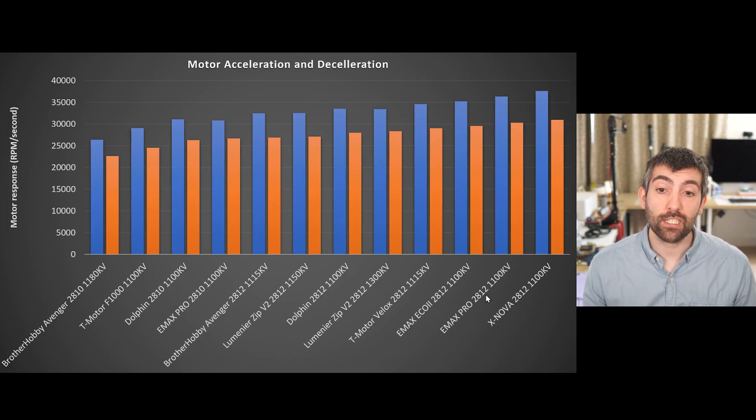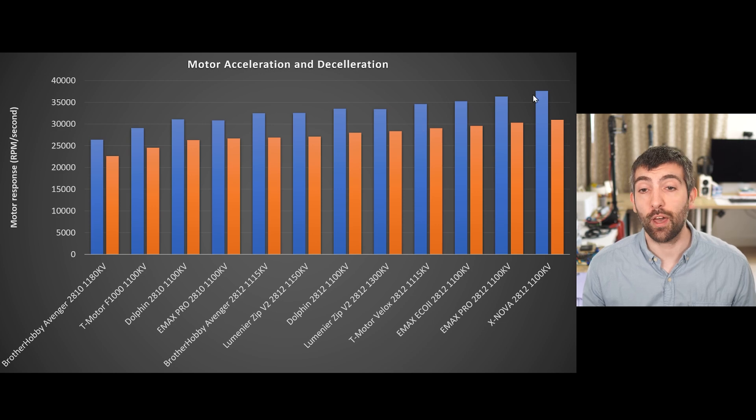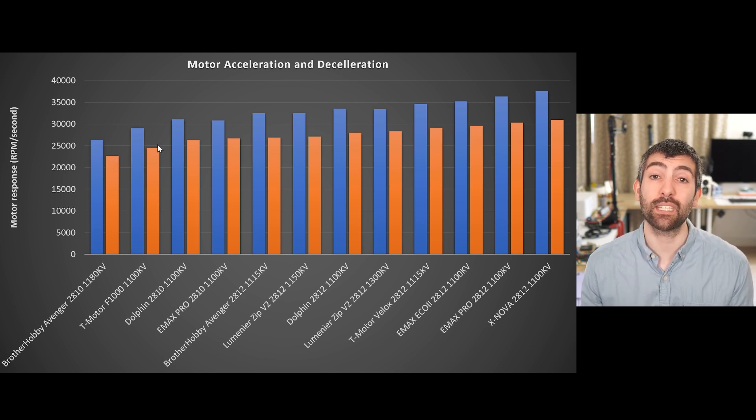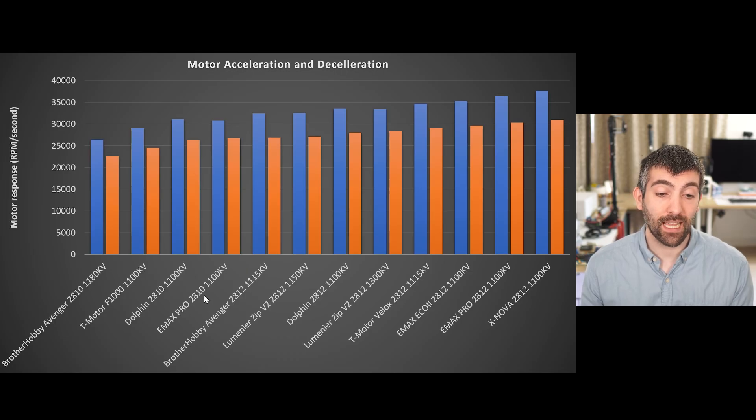Just behind it is the Emax Pro 2812 and the Emax Eco2 2812, both of which are also doing really well. The T motor is also doing fine but as you can see we're starting to move down the list in terms of responsiveness. It's also interesting to see here that we have a very monotonic response. Motors that accelerate faster also brake faster, and so this is very indicative of the magnetic design of the motor and the amount of mechanical torque that it has. The smaller motors as we would expect struggle with acceleration and deceleration. They have less torque because they're a smaller motor, and the Brother Hobby Avenger is particularly struggling in this case with quite a slow acceleration and deceleration compared even to the other 2810 size motors. The Emax Pro 2810 is doing the best in terms of all of the 2810 size motors, and actually the Emax Pro in general is a very responsive motor in all the sizes.